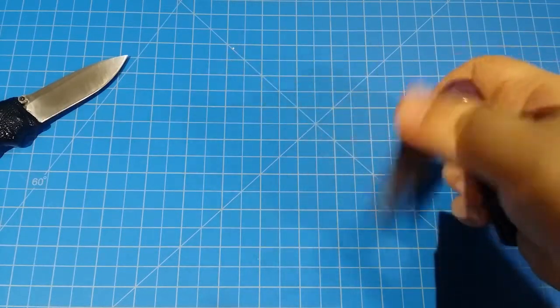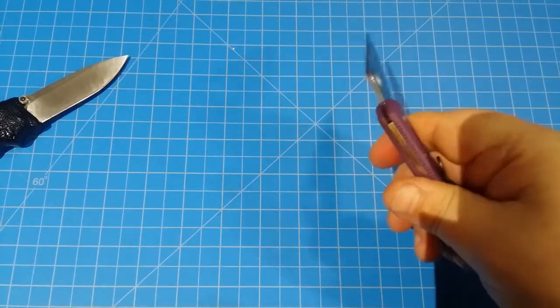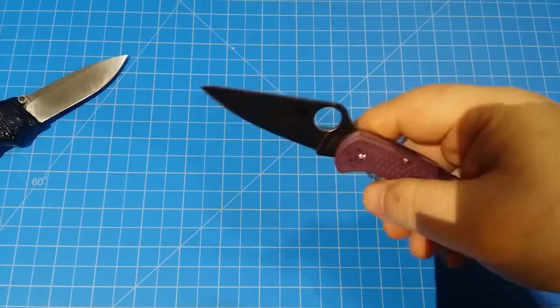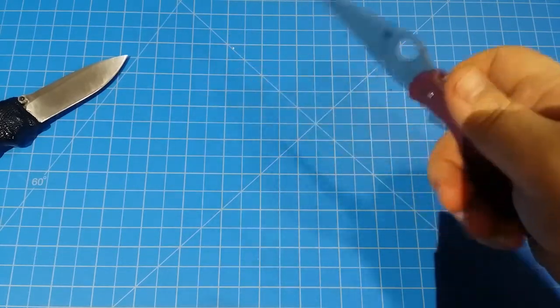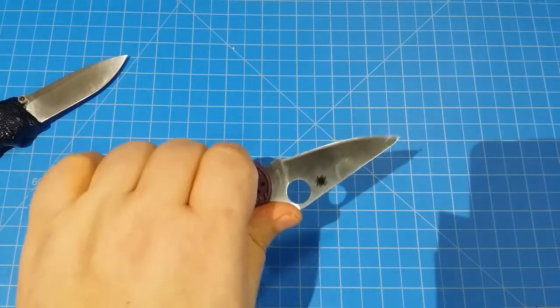And I know I can sharpen VG-10 to razor sharp. It's a good steel, it wears pretty well and it sharpens easily. And I think it'd be perfect for a little jobber like this that you're just going to use from time to time out of your pocket.